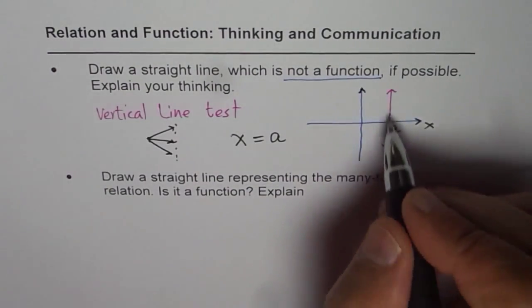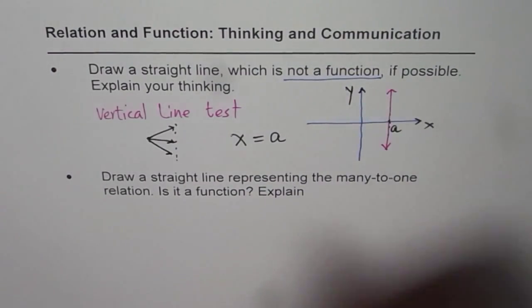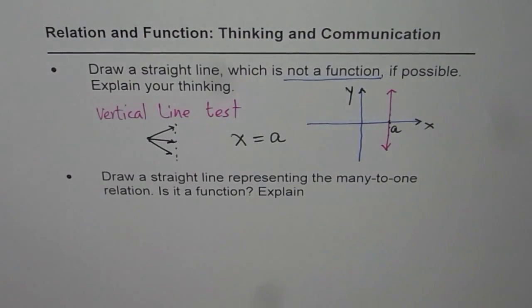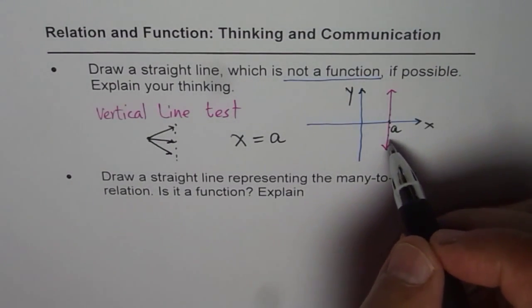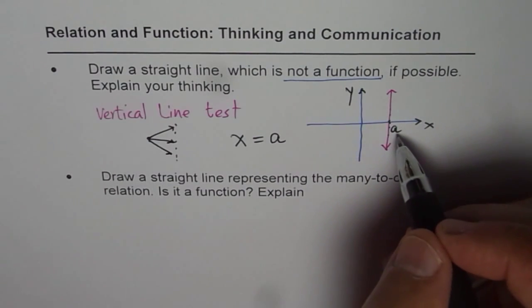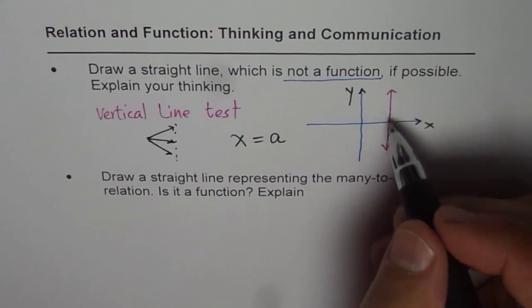If you start writing the coordinate points, you will see that all the values will have x-coordinate the same, which is a, and the y-coordinate will belong to real numbers. So that is how it is.